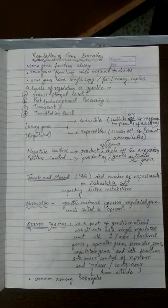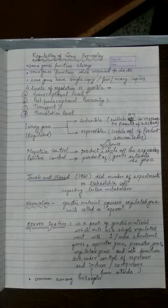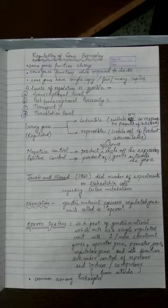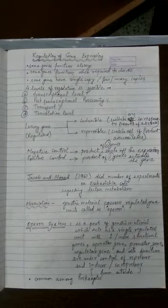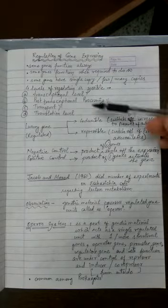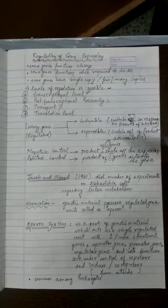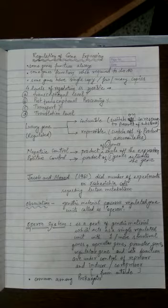We learned that four levels of regulation are possible in the eukaryotic machinery: at the transcriptional level, post-transcriptional processes level, transport, or translation. But when we talk about the prokaryotic machinery, there is only one level of regulation possible, and that is the beginning of transcription. In prokaryotic systems, transcription and translation can be coupled, so transcription itself has to be stopped if gene expression has to be regulated.